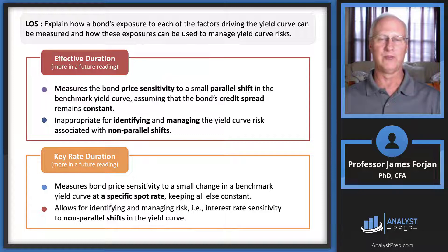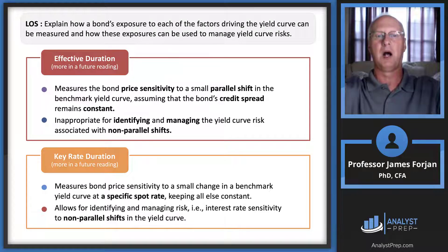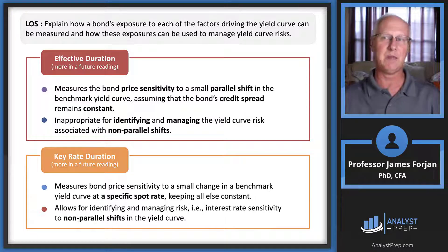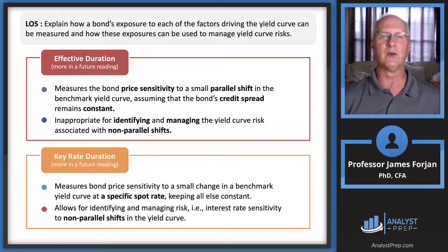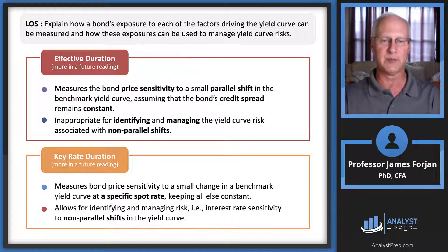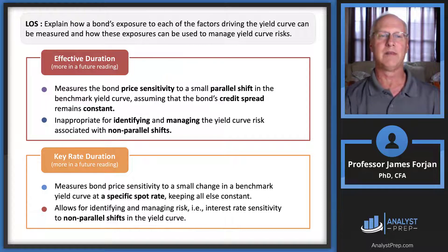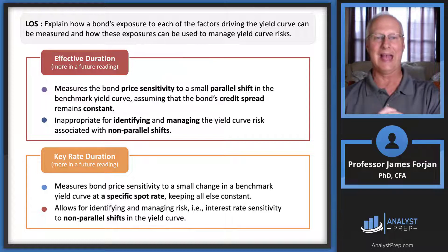Key rate duration measures bond price sensitivity for a small change in a benchmark yield curve at a specific spot rate — such as five years or ten years. This allows us to combine the knowledge of effective duration with analysis of non-parallel twisting of the yield curve at that key time period. By focusing on individual key rates across the curve, we get a more precise picture of how a bond responds to non-parallel yield curve changes.